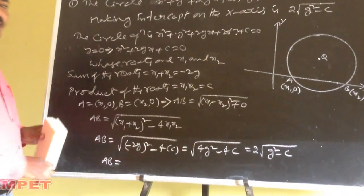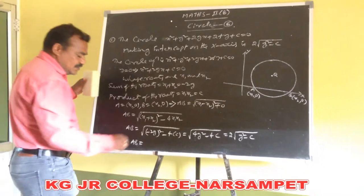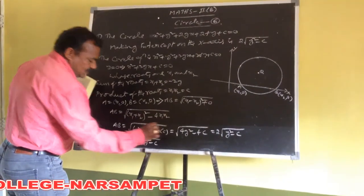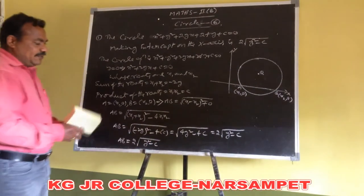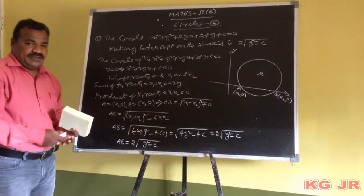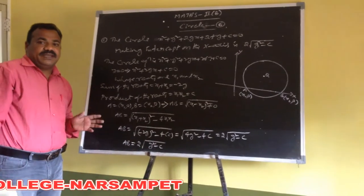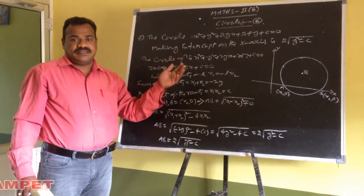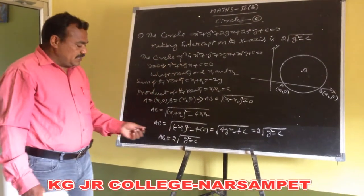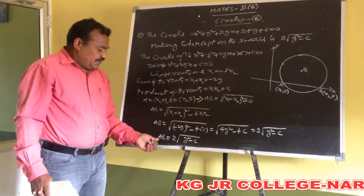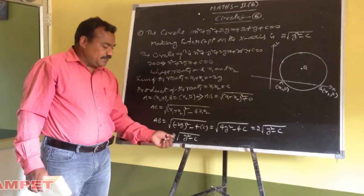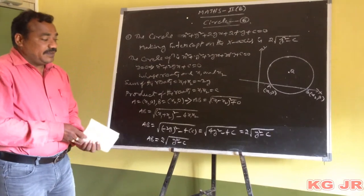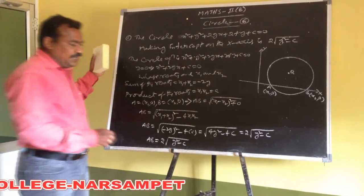So the circle is making intercept upon the x-axis equal to 2 into root of g square minus c. This is one of the key concepts. To find the intercept the circle makes on the x-axis, we must use this formula: AB equals 2 into root of g square minus c.